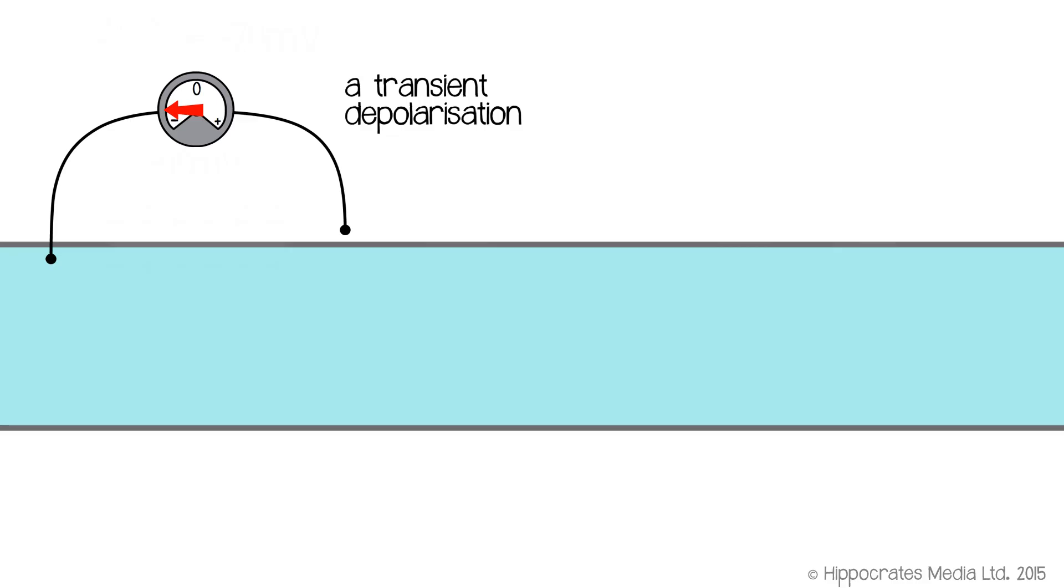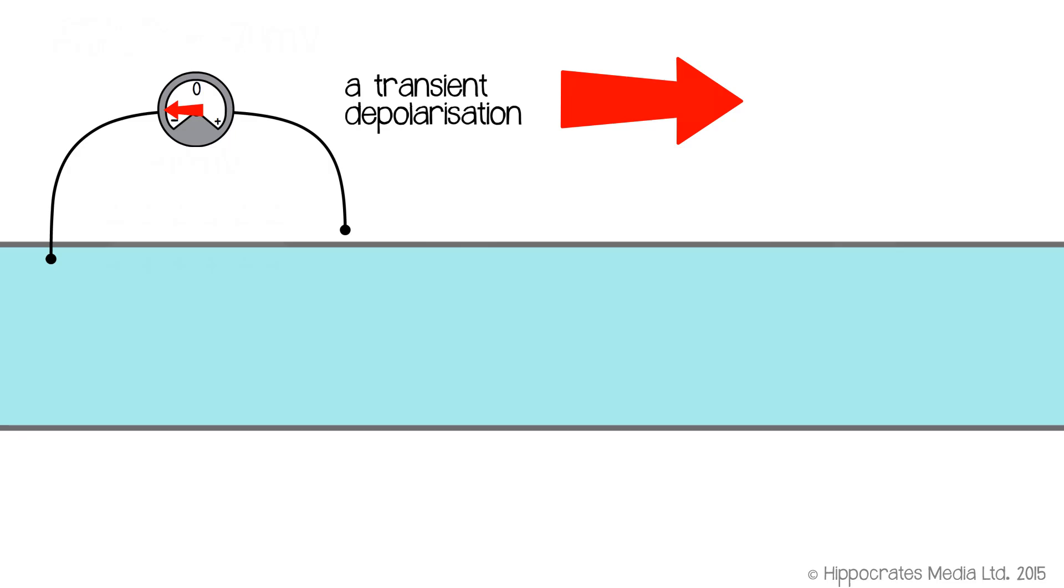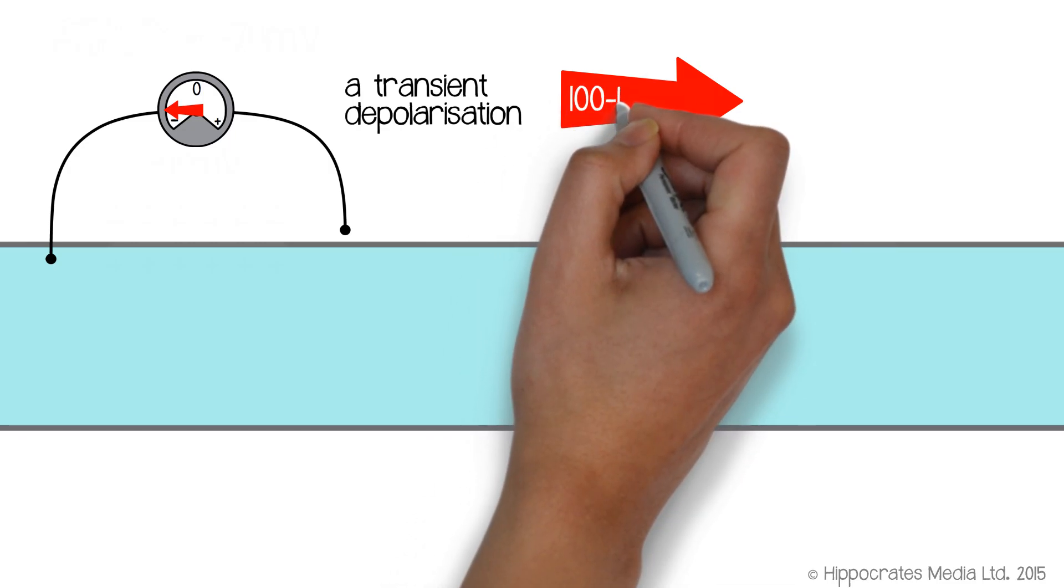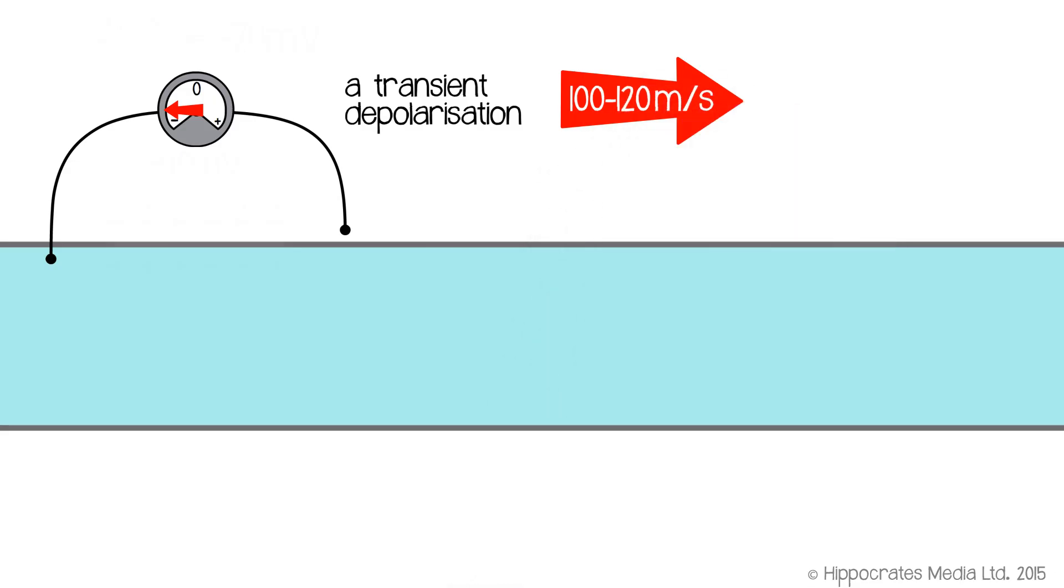And that will propagate along the axon very fast. In our fastest axons, the action potential propagates at somewhere between 100 or 120 meters per second. So it's a very rapid electrical signal which allows our central nervous system to communicate with the muscles of our body very rapidly indeed.